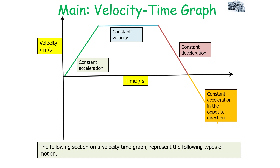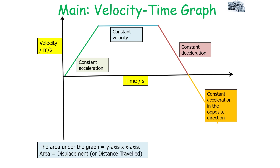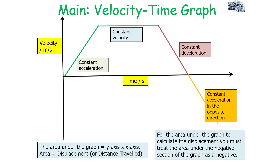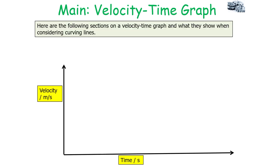The area under a velocity-time graph is the y-axis value multiplied by the x-axis value — in this case, velocity multiplied by time — which gives displacement or distance travelled. To calculate displacement, treat the area under the negative section of the graph (below the x-axis) as negative. To calculate distance travelled, treat that same area as a positive value.